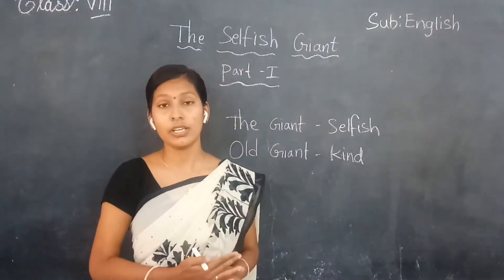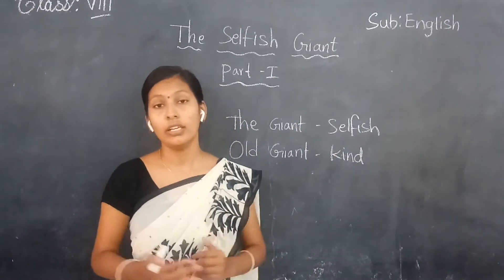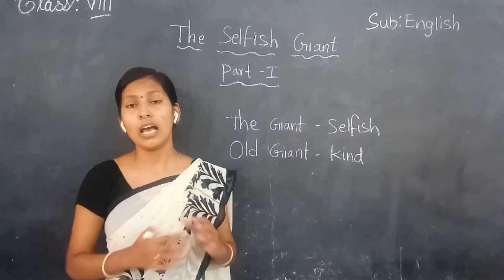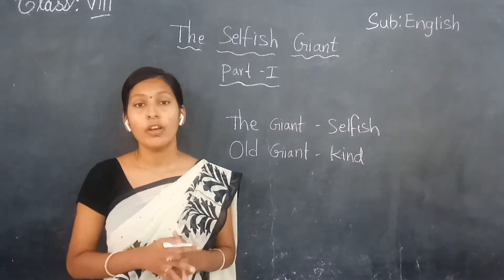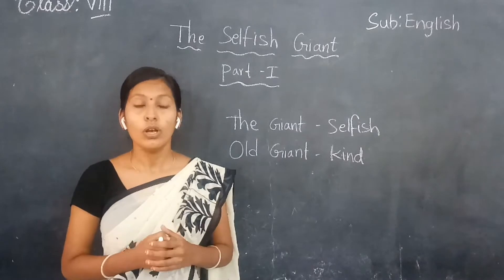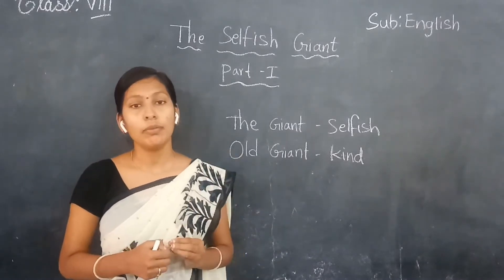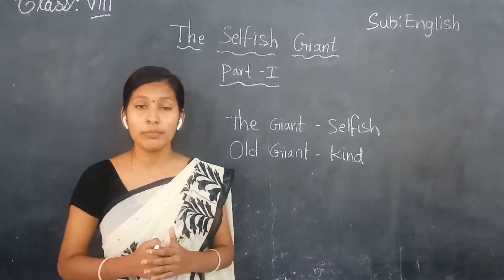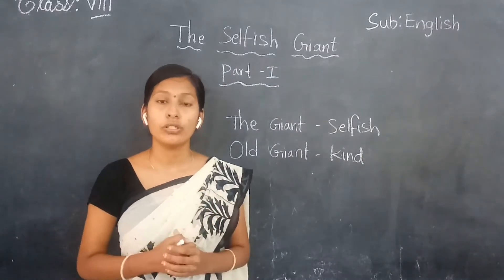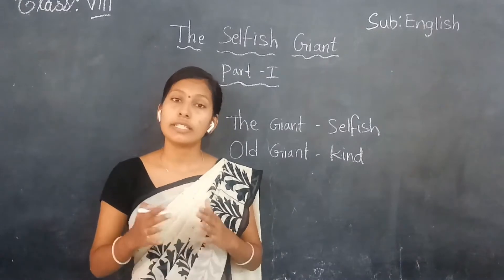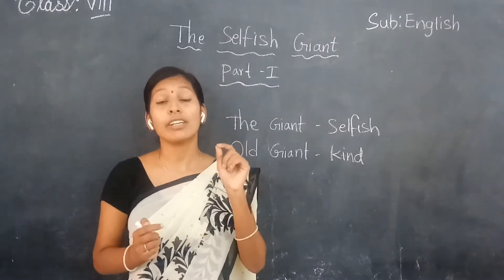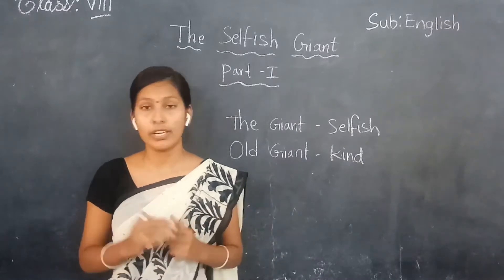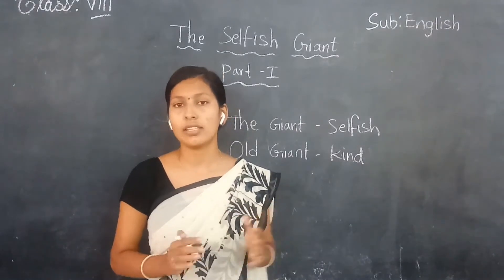How he changed from selfish to kind we discussed in the last session. So Jane has a large beautiful garden where he stays. One time he thought to go and meet his friend, Cordish Oj. He went there and stayed with his friend for seven years. Then later he came back to his castle.